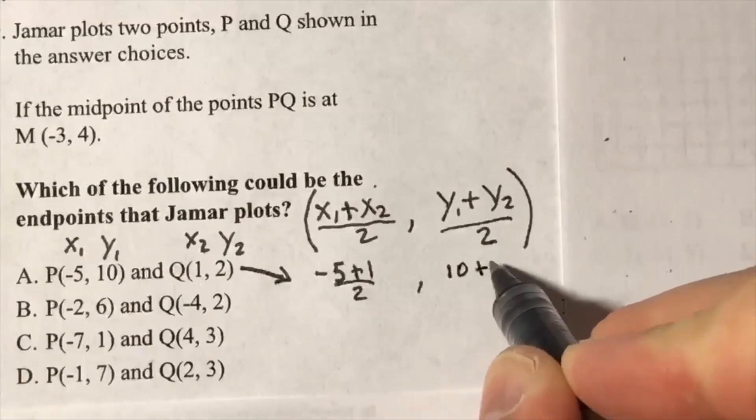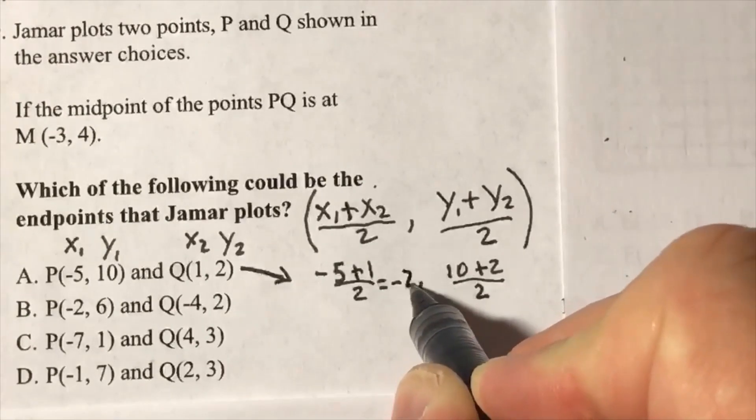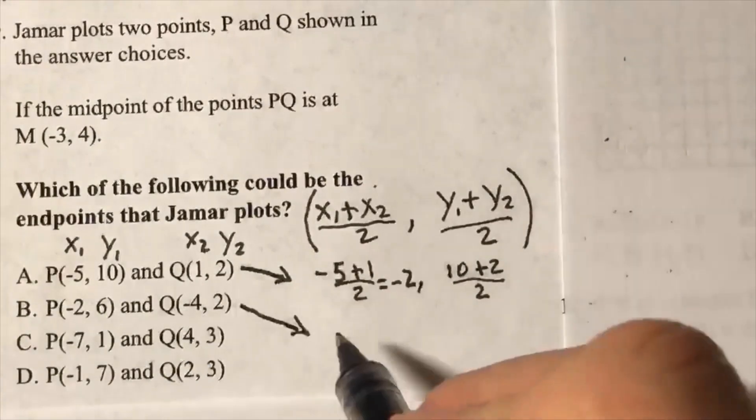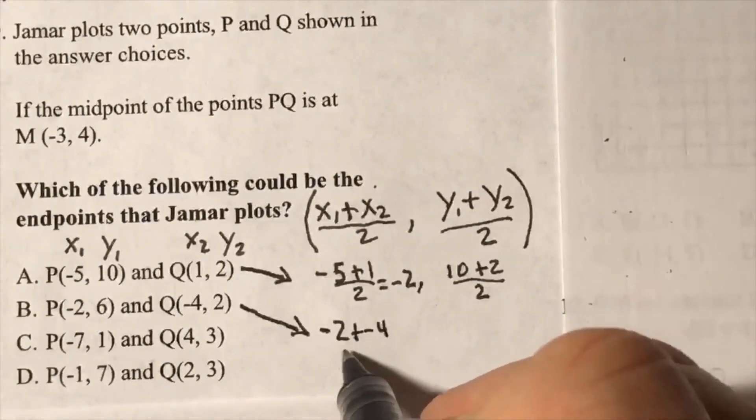10 + 2, and that equals -2 + -4, -2 + -4.